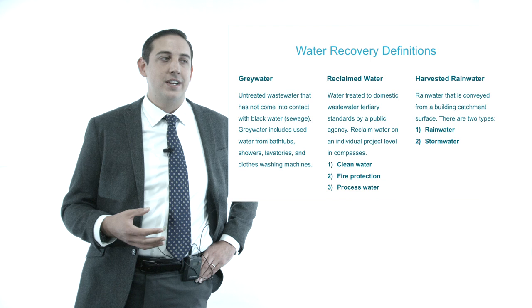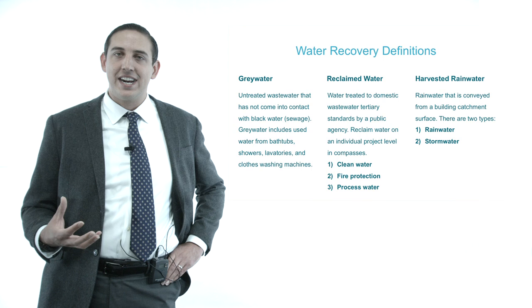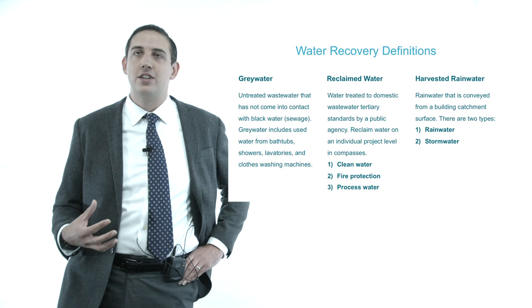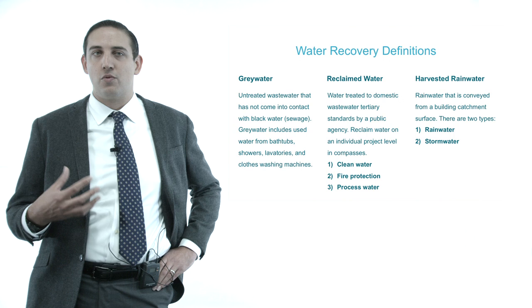The two we focus on predominantly here in the United States are both reclaimed water and then harvested rain water. Reclaimed water, which is also identified sometimes as clean or clear water, is water from such devices as HVAC condensate, reverse osmosis reject, fire protection waters — waters that have been used but really have picked up very little if any contamination from these different sources. And then lastly, we have harvested rain water.